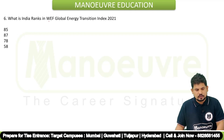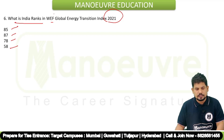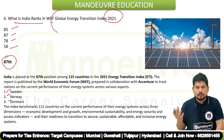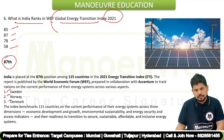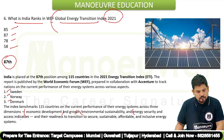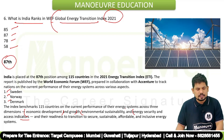What is India's rank in the World Economic Forum Global Energy Transition Index 2021? The options are 85, 87, 78, and 58. The correct answer is 87th. The top three countries are Sweden, Norway, and Denmark. The index is based on parameters of economic development and growth, environmental sustainability, and energy security.